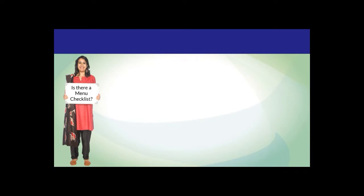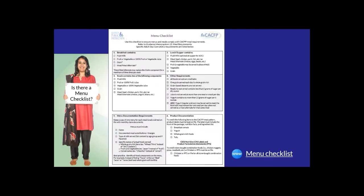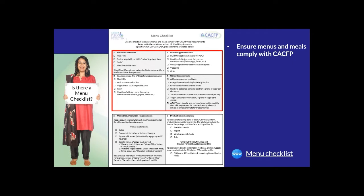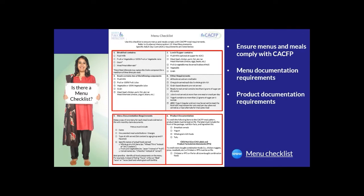Our first question about menu planning is: is there a menu checklist? And the answer is yes. The DPI has a menu checklist to use when planning and creating menus to help ensure menus and meals comply with CACFP meal pattern and menu documentation requirements. Sections 1 through 4 list the meal components that must be served at each meal and snack and other requirements that must be met when planning menus. Section 5 includes CACFP menu documentation requirements, which is specific information that must be included on menus.